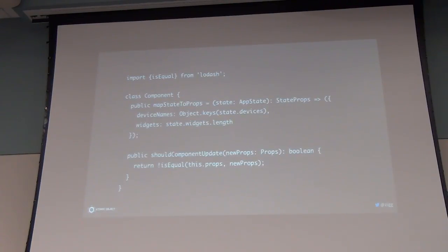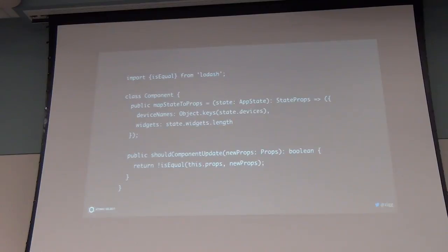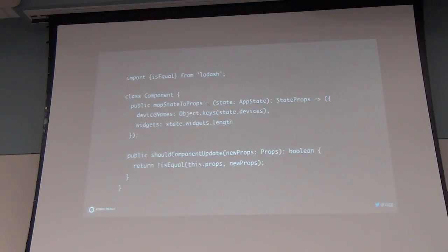The solution was fairly simple. We added a lifecycle method to the Redux component that used a deep compare instead of a shallow compare, and that was enough to patch it over. We also looked at other instances where we were creating similar problems and changed the way our properties were coming out so it didn't trigger that issue all the time. That was enough to get everything back to handling those hundred updates per second live across several different things.